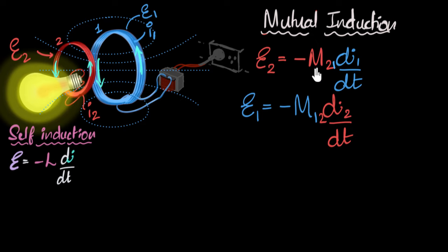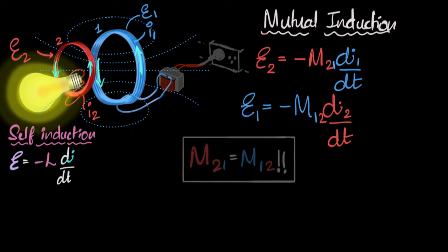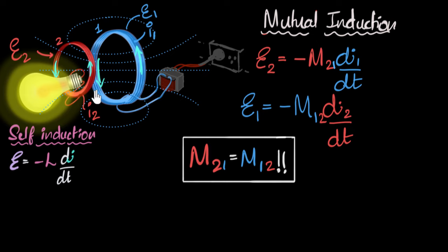Finally, there is a very nice surprising connection between the two mutual inductances. You might have no idea what the relationship would be or why there should even be a connection between the two — but it turns out that M12 and M21 will always be equal to each other. You have to mark this with an exclamation because it is by no means obvious. This means that for a pair of coils there is one single value for mutual inductance, whether you consider it as M21 or M12. This is super useful when calculating mutual inductances, because you can decide which one is easier to calculate — and sometimes one of them is almost impossible while the other is straightforward. We'll explore that in future videos.